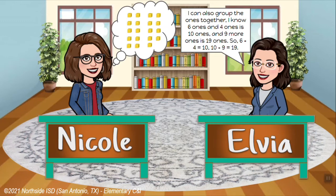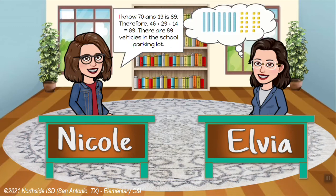I can also group the ones together. I know 6 ones and 4 ones is 10 ones, and 9 more ones is 19 ones. So 6 plus 4 equals 10 and 10 plus 9 equals 19. I know 70 and 19 is 89. Therefore, 46 plus 29 plus 14 equals 89. There are 89 vehicles in the school parking lot.